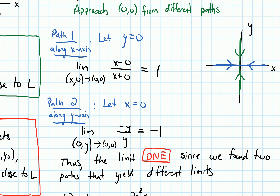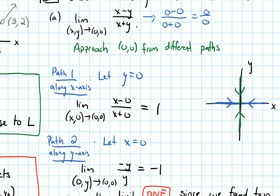For the limit to exist, it must be the same along any path approaching the point. If we can find even two paths along which we get different values for the limit, then we say the limit does not exist. I got lucky here — the first two paths I tried gave different values. As we'll see in the next example, that won't always be the case; sometimes we may have to try multiple paths.